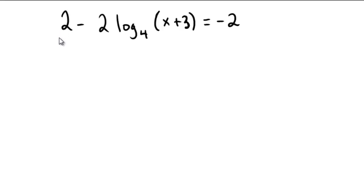Assuming you paused and gave it a shot, here let's now do it together. Subtract 2 from both sides of the equation so that negative 2 log base 4 of x plus 3 is equal to negative 2 minus 2 more which is negative 4.